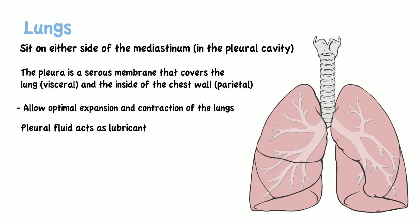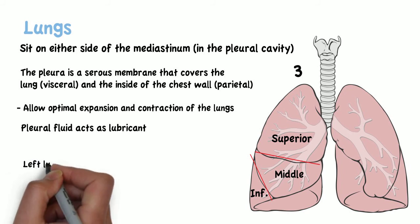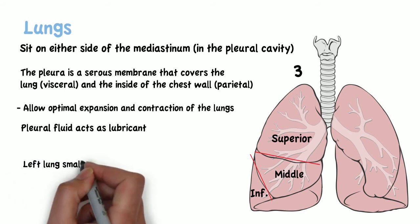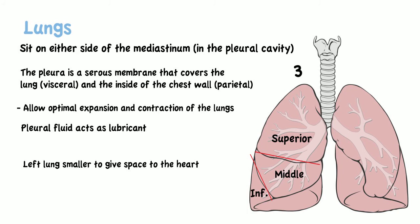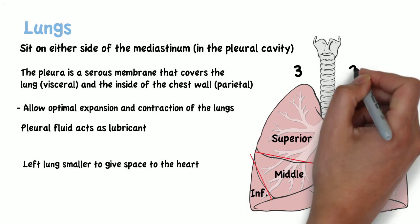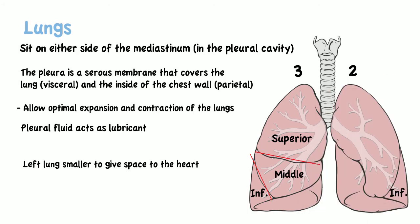The right lung contains three lobes — superior, middle, and inferior — divided by an oblique fissure and a horizontal fissure. The left lung, on the other hand, is slightly smaller to give space to the heart and is composed of two lobes, the inferior and superior lobes, divided by an oblique fissure only.